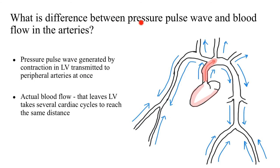What is the difference between the pressure pulse wave and the blood flow in the arteries? The pressure pulse wave is generated by the contraction of the left ventricle and is transmitted to the peripheral arteries very quickly. As depicted by the blue arrows, the pressure pulse wave travels so fast that it even gets reflected from the peripheral arterioles. The actual blood flow in the arteries — the blood that leaves the left ventricle — takes several cardiac cycles to reach that same distance. So this blood flow lags behind the pressure pulse wave, which goes much faster.